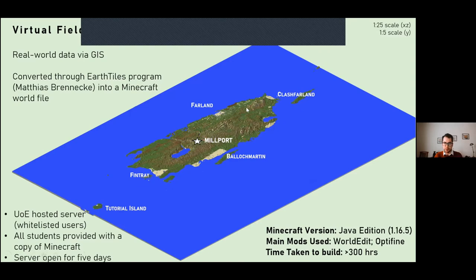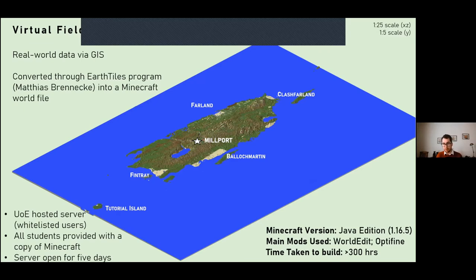I manipulated the space to create a giant fieldwork area which I could add to and develop over about six months. The main island consists of four beaches and a central space called Millport in homage to the field trip they would have nominally gone on. We had a tutorial island as well to get people up to speed. I'd originally conceived of it as a single-player experience, which in hindsight wouldn't have worked at all. We were lucky that the IT department in biology at Edinburgh liked Minecraft and helped set up a server on University of Edinburgh infrastructure. We whitelisted the students, gave them a copy of Minecraft — about £18 — added their usernames, and had complete control over who was in the space.